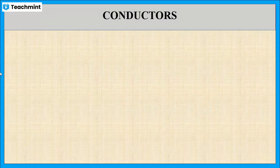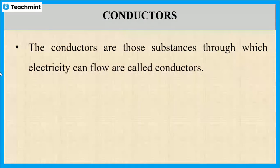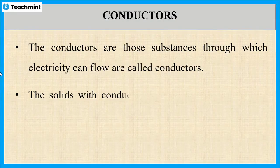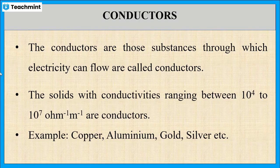First, let us see what are conductors. These are the substances through which electricity can flow. Such kind of substances are known as conductors. Its conductivity is ranging between 10 to the power 4 to 10 to the power 7 per ohm per meter. Copper, aluminium, gold, and silver are some examples of conductors.